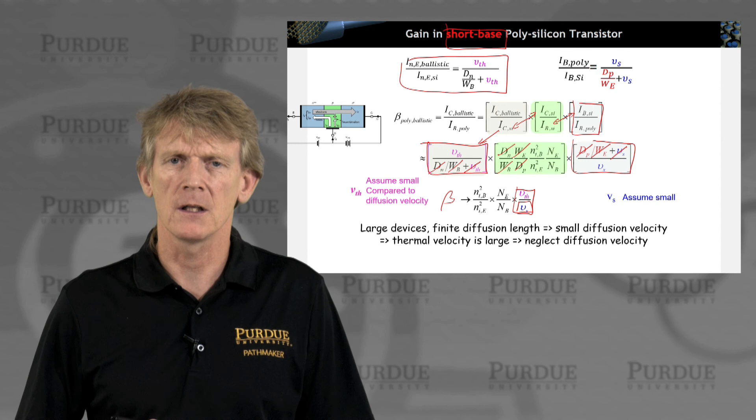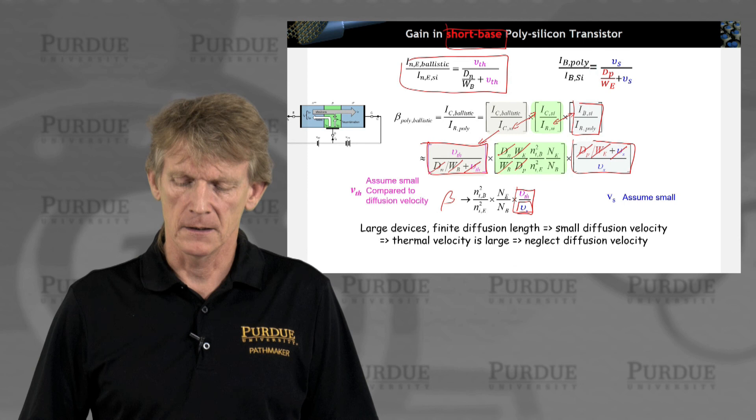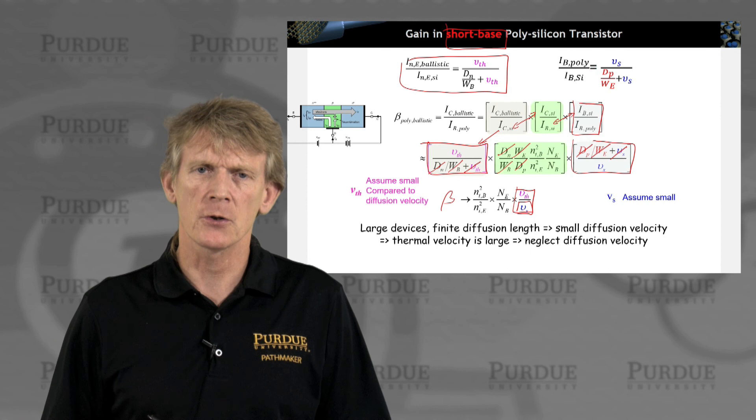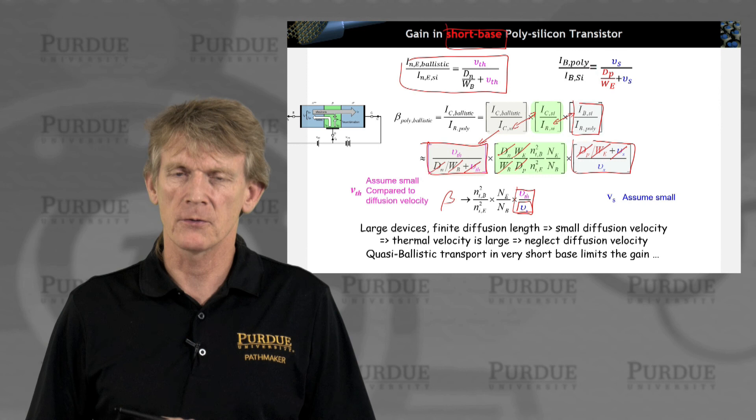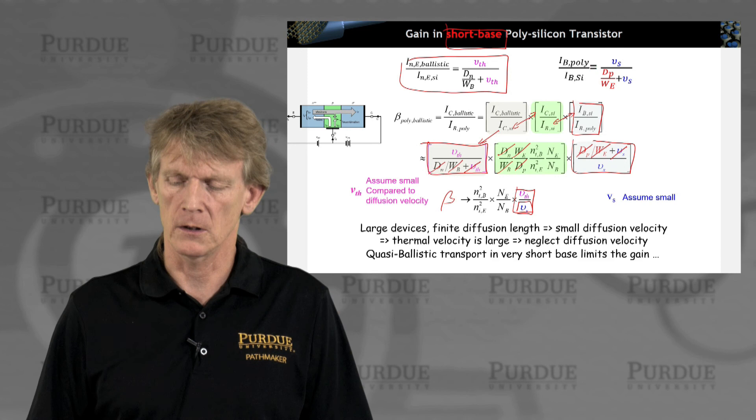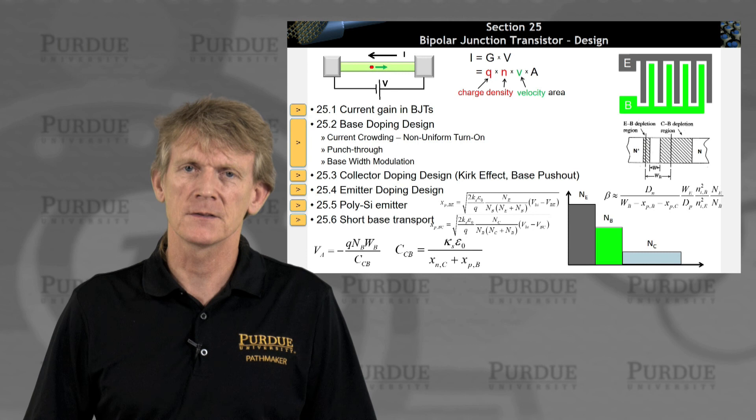So, if you have large devices, finite diffusion lengths, small diffusion velocity, the thermal velocity is large, you can neglect this diffusion velocity. But, if you are in very short devices, then you need to consider these terms, the relative sizes, and in a quasi-ballistic transport, you basically are stuck with this. You can't do a whole lot more optimization.